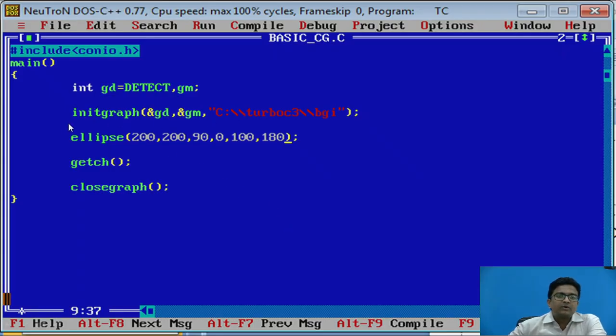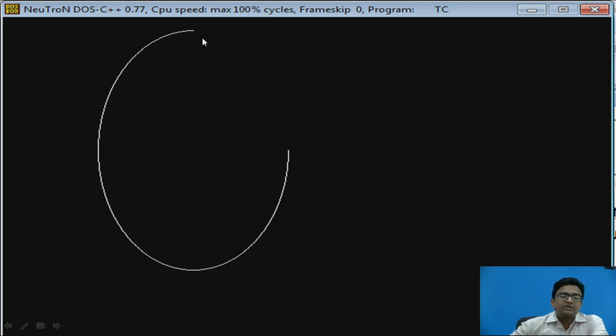Let us see the program. The center point is 200, 200, starting angle is 90 degrees, end angle is 0, x radius is 100 and y radius is 180. So this will draw the ellipse with given x radius and y radius. So this is the x radius and here you are having y radius.